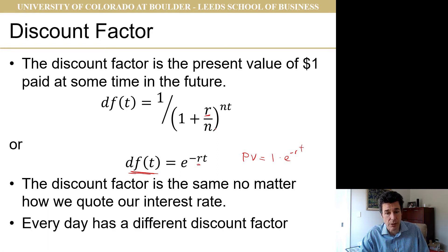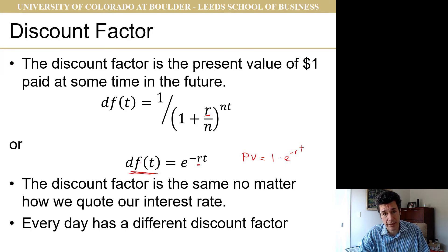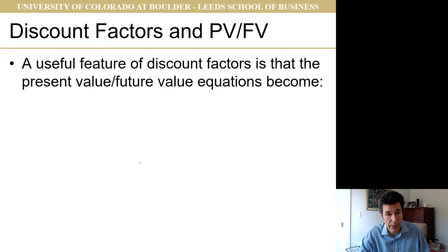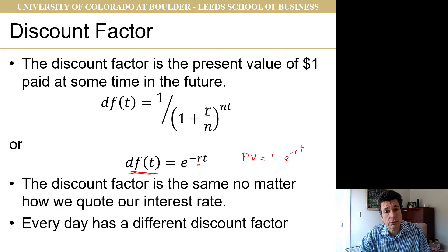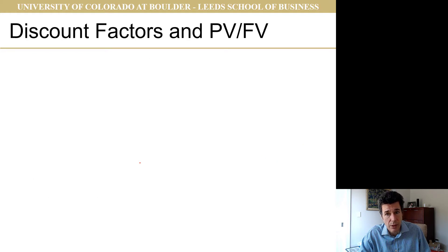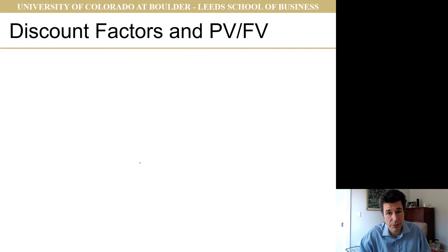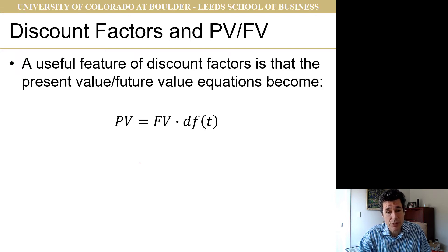One thing to note is that when you change t, the discount factor changes, so every day has a different discount factor. We have a relationship between discount factors and our present value/future value formulas: present value equals future value times the discount factor. If the future value is $10,000, the present value is $10,000 times the present value of $1.